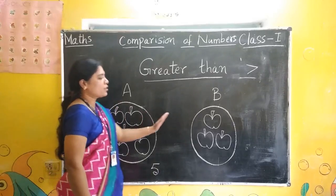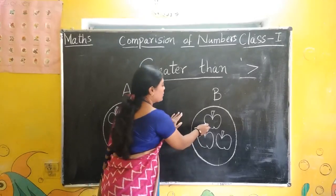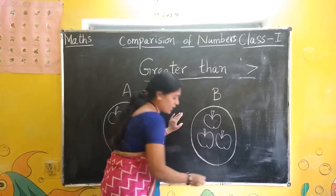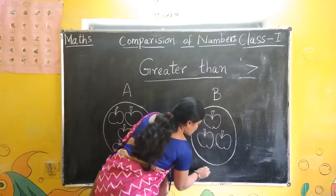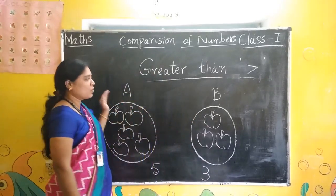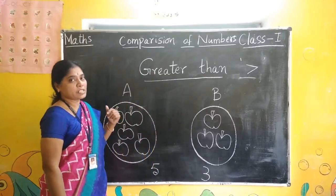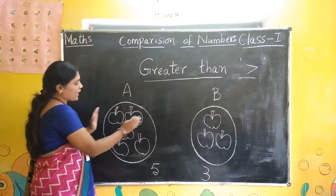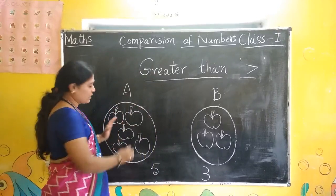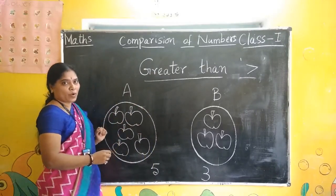In this group how many apples are there? Count: 1, 2, 3. 3 apples. Now how to compare whether which is more? By looking at these pictures we know that these are more apples.